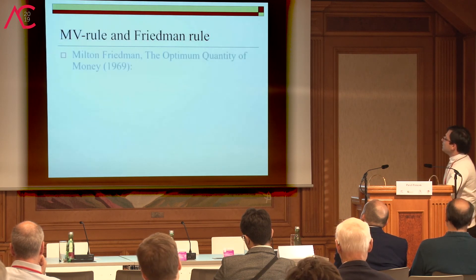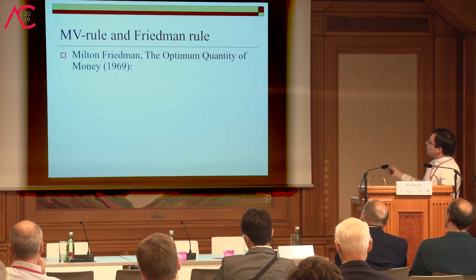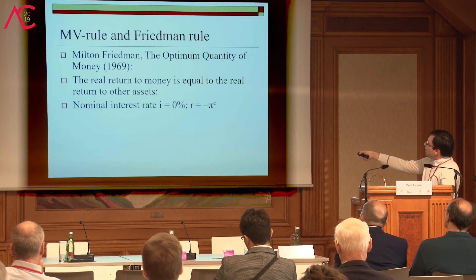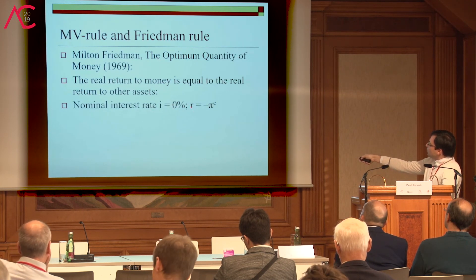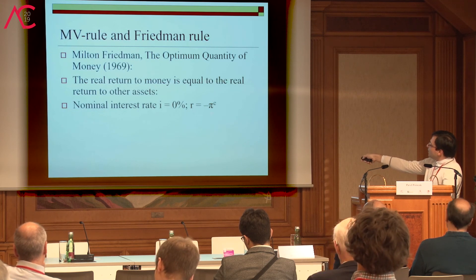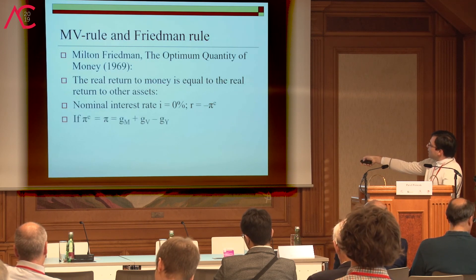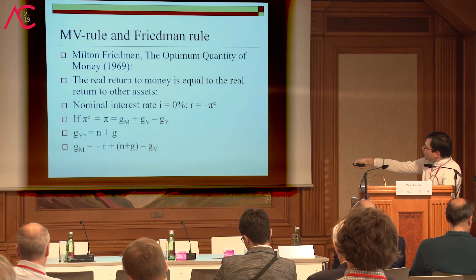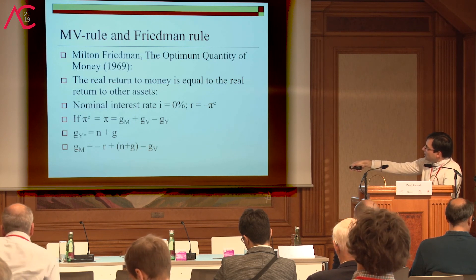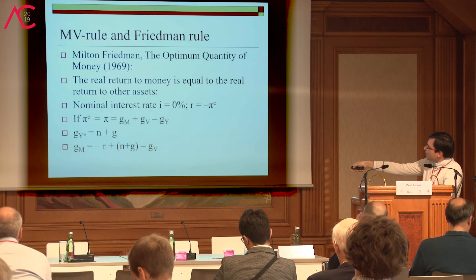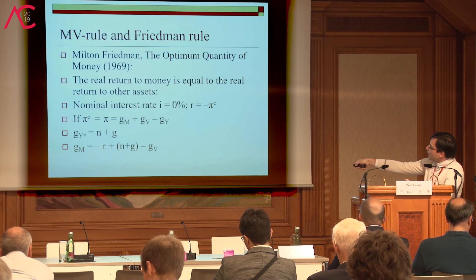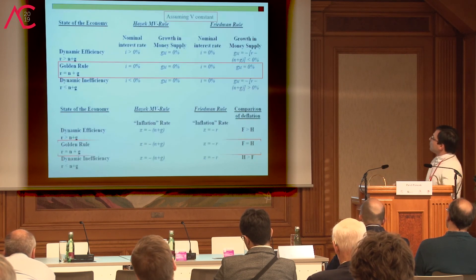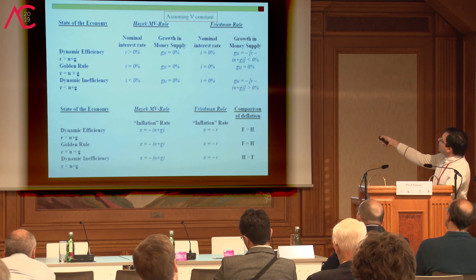Finally, let me compare Milton Friedman's rule — the optimum quantity of money — with the Hayek rule. Friedman recommended the nominal interest rate to be zero, meaning the real interest rate should equal the negative of expected inflation. Under the Friedman rule, if there is no growth in the economy and no change in velocity, there should be monetary restriction: the money supply should be falling at the rate of the positive interest rate. That is the outcome of the Friedman rule.